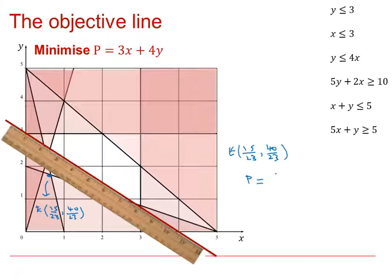So p is 3 times the x-coordinate, that's 45 over 23, plus 4 times the y-coordinate, that's 160 over 23, so our minimum value is 205 over 23, and that will happen when x is 15 over 23 and y is 40 over 23.